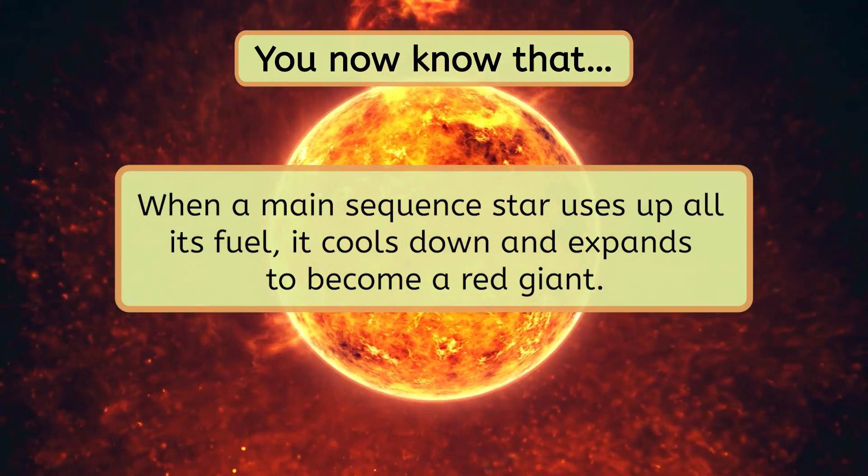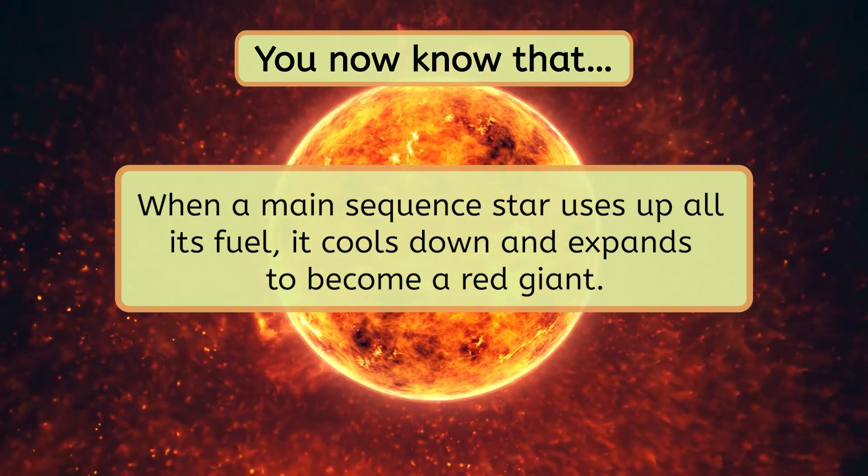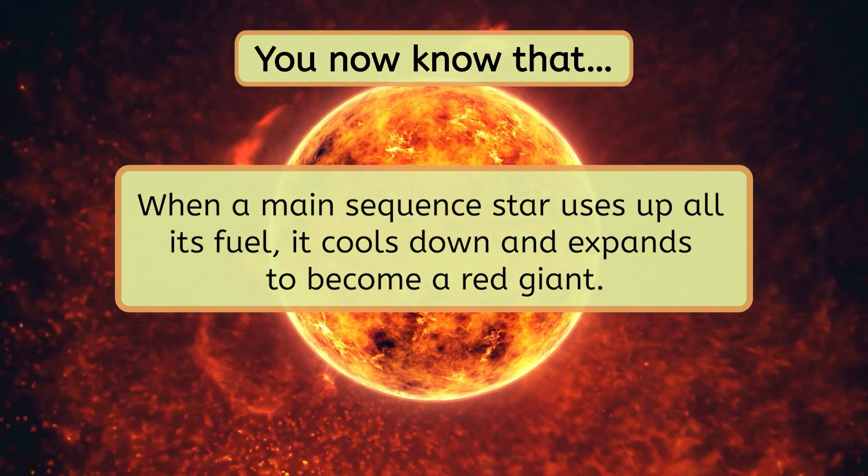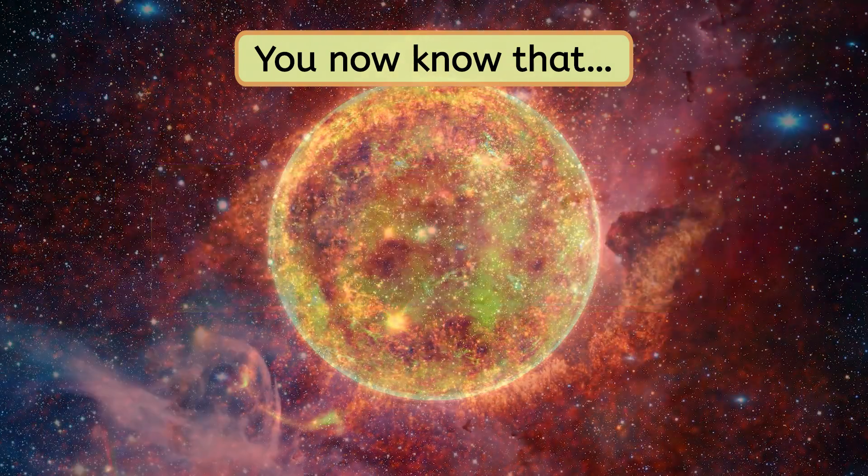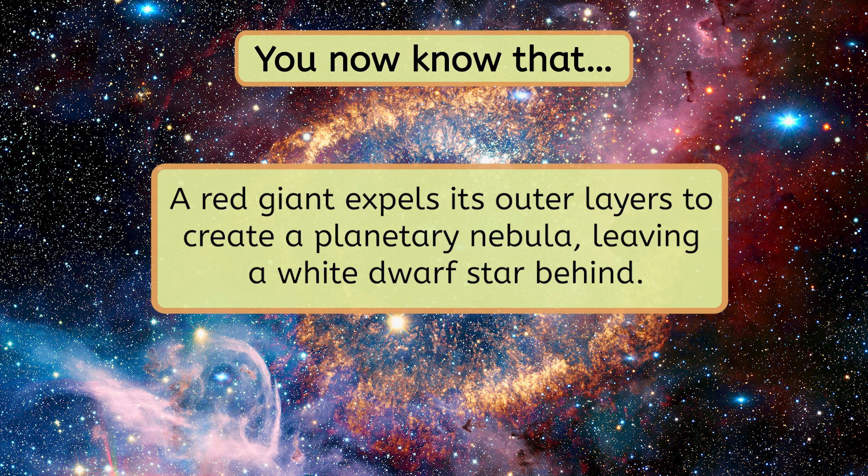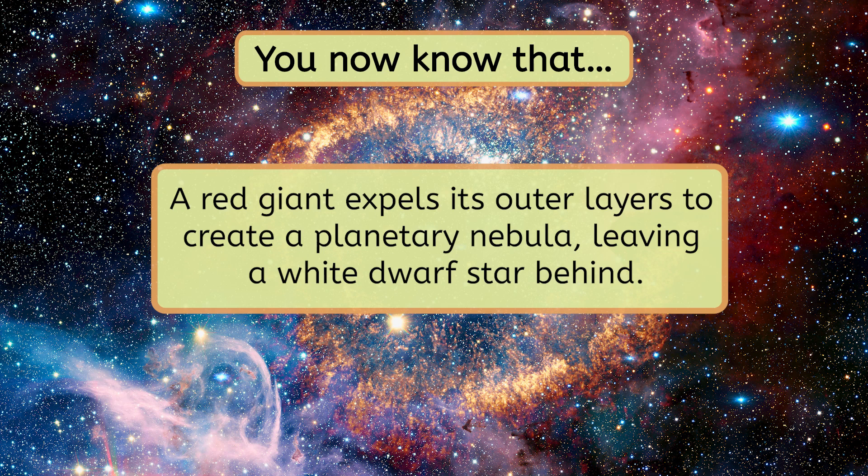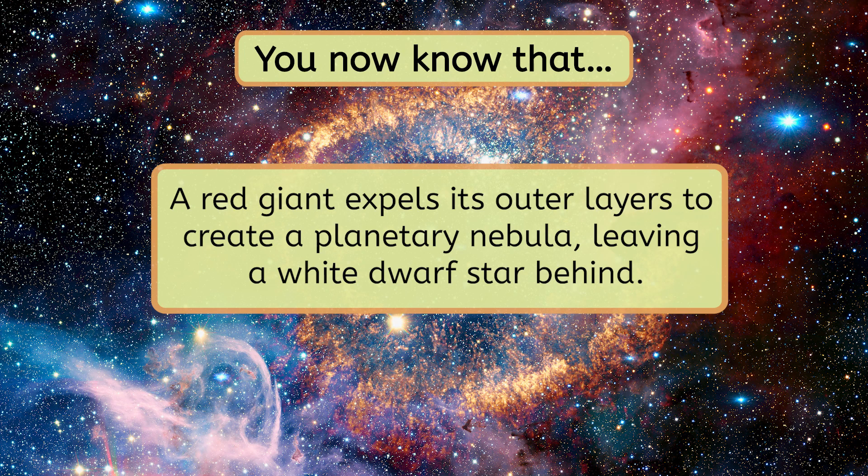When that main sequence star uses up all its fuel it cools down and expands to become a red giant. And lastly a red giant expels its outer layers to create a planetary nebula leaving a white dwarf star behind and the cycle starts over again.